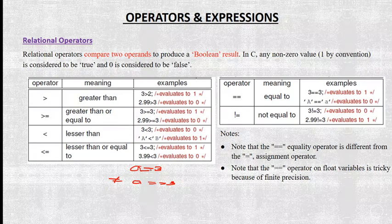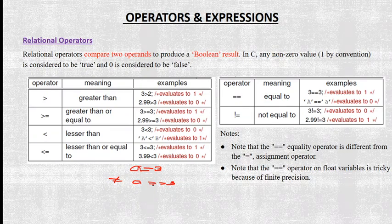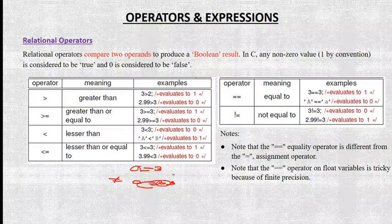To clarify: a = 3 is the assignment operator, assigning the value 3 to variable a. While a == 3 is the relational operator, checking if a is equal to 3. These are two different things.